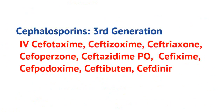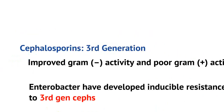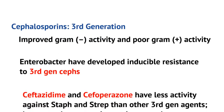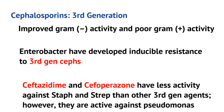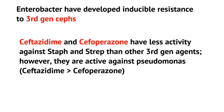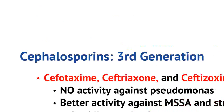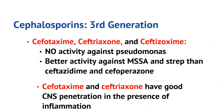Third gen cephalosporins include cefotaxime, ceftriaxone, ceftazidime, cefpodoxime, cefibuten, and cefdinir. They are very widely used because their coverage includes improved gram-negative activity, though they do have poor gram-positive activity. Enterobacter has developed inducible resistance to third gen cephalosporins. Ceftazidime and cefoperazone have less activity against Staph and Strep than other third gen agents, but they do have activity against Pseudomonas, with ceftazidime having greater activity against Pseudomonas than cefoperazone. Cefotaxime, ceftriaxone, and ceftizoxime have no activity against Pseudomonas but have better activity against methicillin-sensitive Staph aureus and Strep.